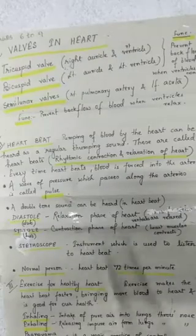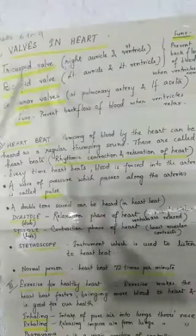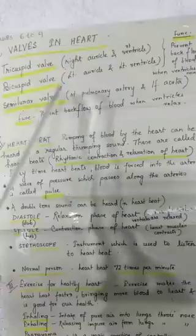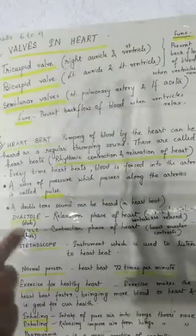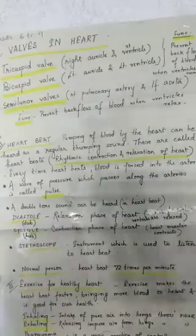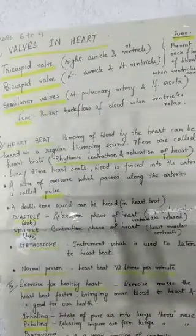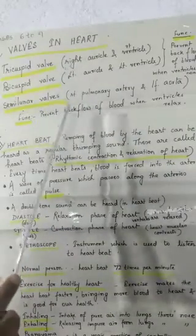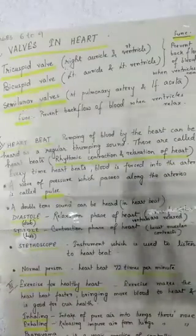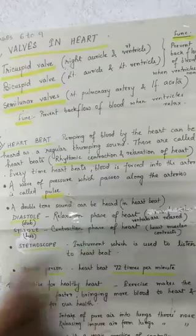Names of the valves: Tricuspid, Bicuspid, and Semilunar valves. The Tricuspid valve is located between the right auricle or atrium and right ventricle. The Bicuspid valve is located between the left auricle or atrium and left ventricle. The Semilunar valves are located at the opening of the pulmonary artery and at the opening of the aorta.